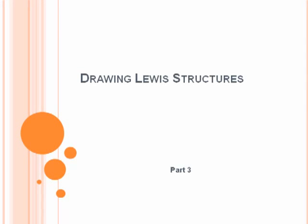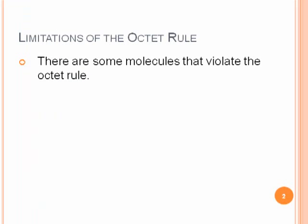This is part three of our tutorial on drawing Lewis structures. This part of the tutorial will focus on drawing Lewis structures that violate the octet rule. There are some limitations to the octet rule in some cases where that rule is violated. We'll give you some examples of those.